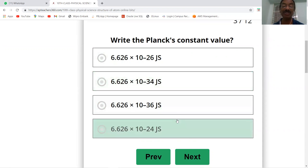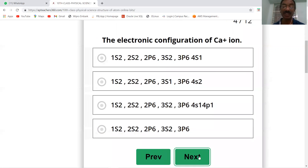The electronic configuration of Ca+ ion. You know that calcium has atomic number 20. So for Ca+ ion, which has lost one electron, there are 19 electrons.